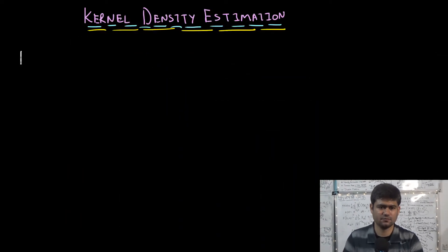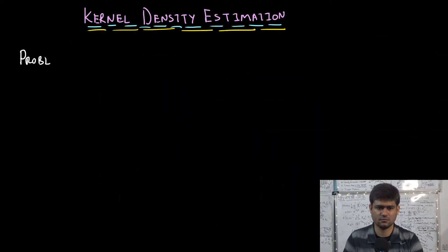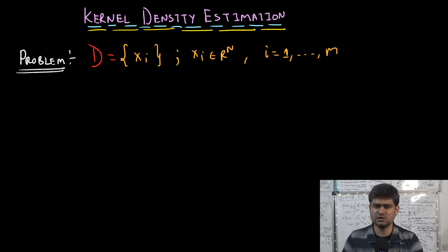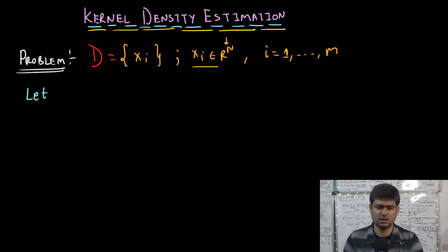Let's begin with our problem statement. Let's assume that we have a dataset which is a set of m data points xi, where each xi is an n-dimensional real vector and we have m such data points, that is, i goes from 1 to m. Now, let p of x be a multimodal distribution.